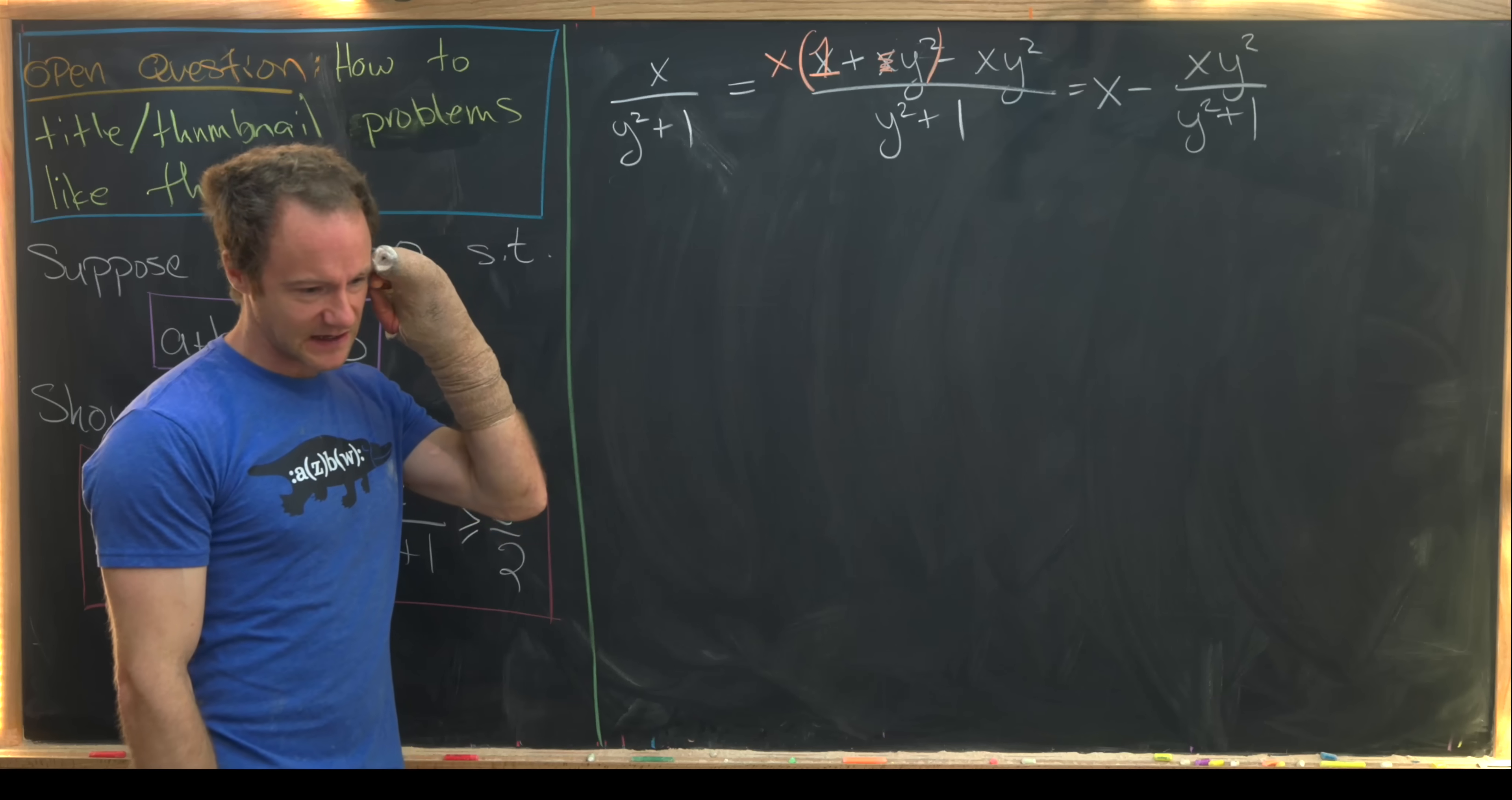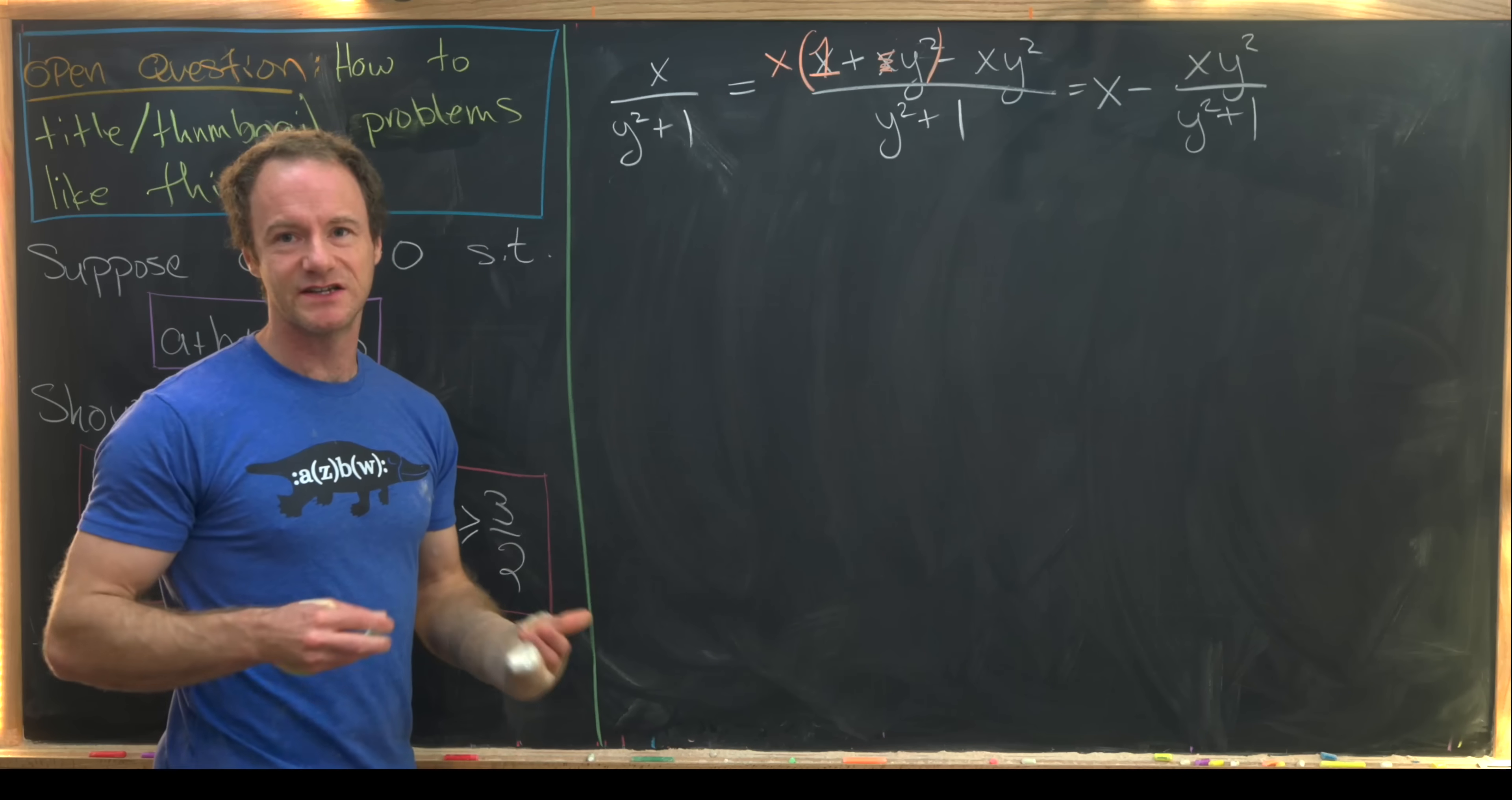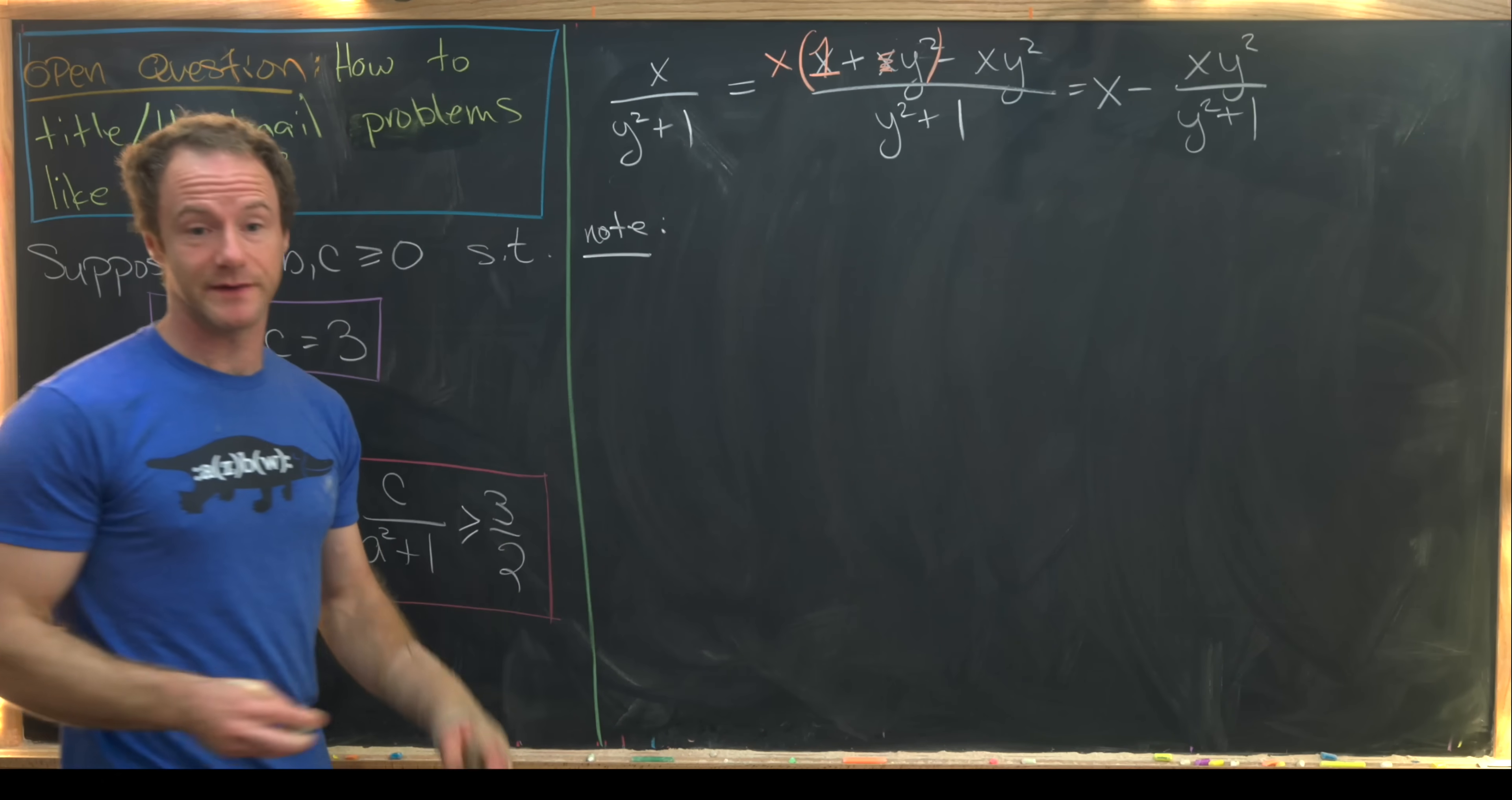And I think technically what's going on here is we're using that arithmetic geometric mean inequality. But since there are only two objects that we're comparing here, I like to do this kind of all on its own. So let's maybe make the following observation, which is fairly elementary.